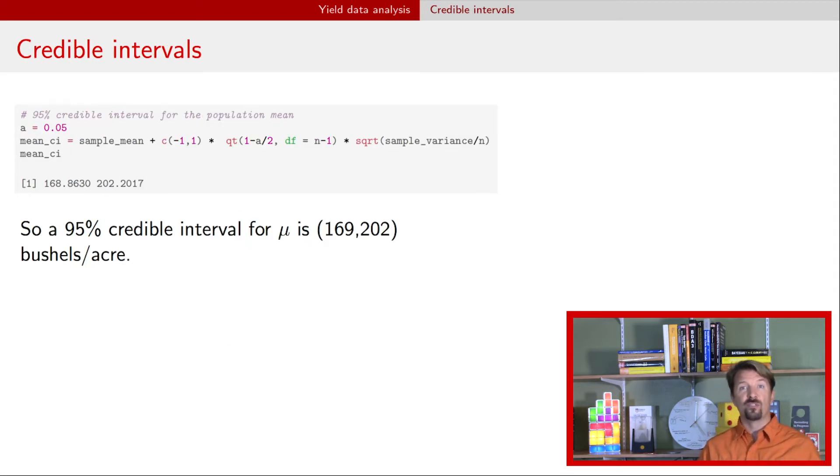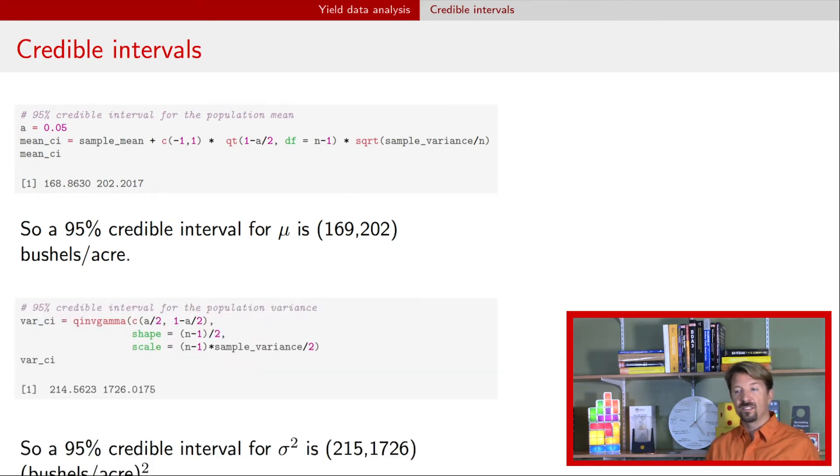All right, we can get credible intervals using the formulas we provided on the previous video. So the credible interval for the population mean yield is 169 to 202. So what that means is that our belief about that true population mean yield in Iowa is somewhere between 169 and 202. We can get a similar result for the variance. So for the variance, I guess it's a little bit cut off there, but the 95% credible interval for the variance ranges from 215 to 1726. And again, this is in bushels per acre squared, making it somewhat hard to interpret.